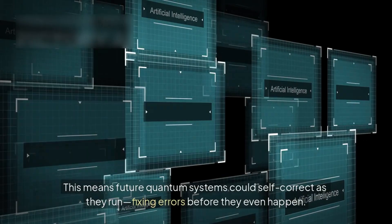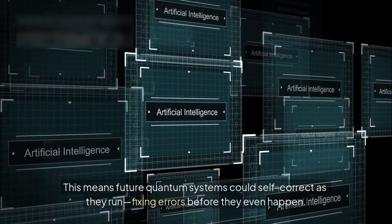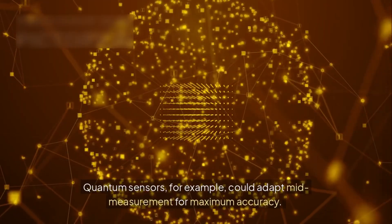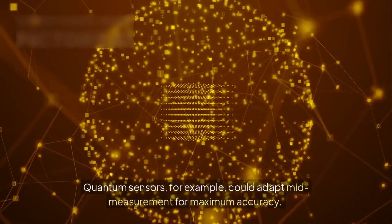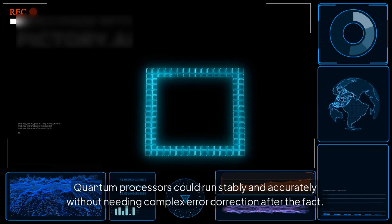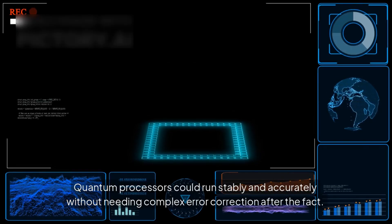This means future quantum systems could self-correct as they run, fixing errors before they even happen. Quantum sensors, for example, could adapt mid-measurement for maximum accuracy. Quantum processes could run stably and accurately without needing complex error correction after the fact.